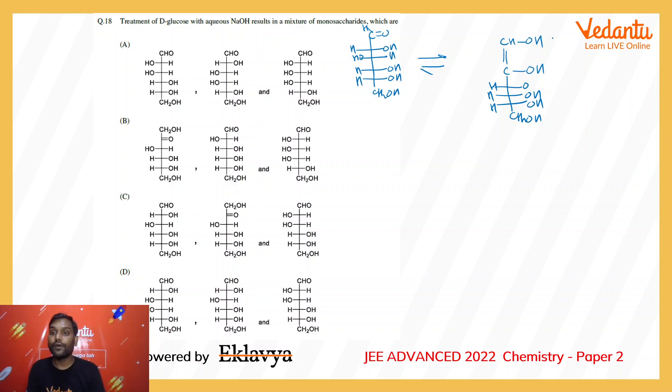Now when this enediol again gets converted into the keto form, then there are two hydrogens which can participate in that conversion. If this one participates in the tautomerization, then it will again form either glucose or its C2 epimer mannose. So one possibility is formation of glucose, which is one of the monosaccharides present in the mixture. And other possibility is formation of C2 epimer.